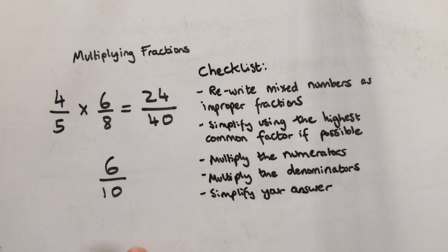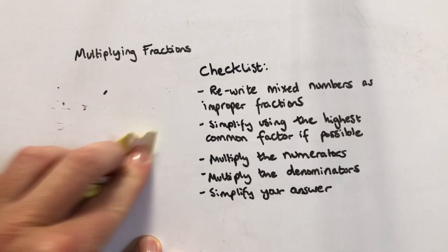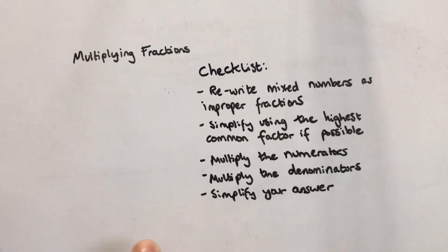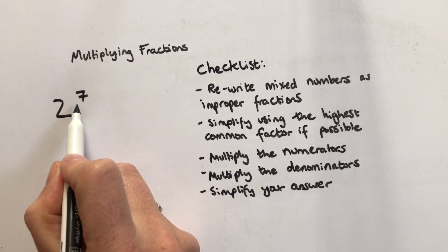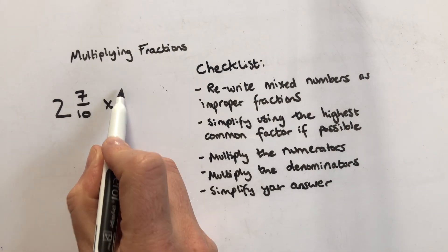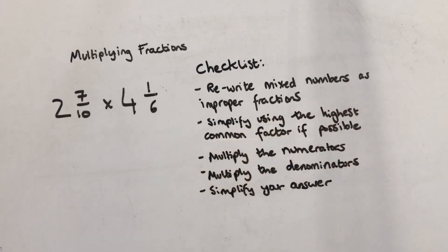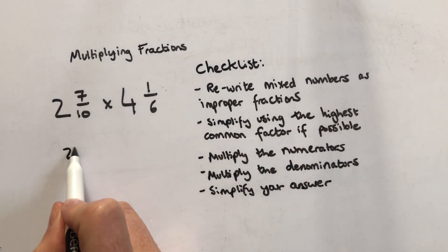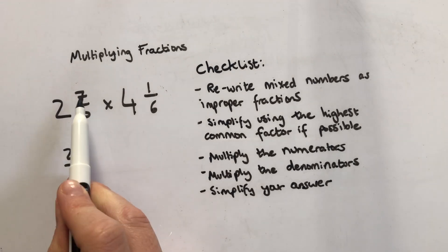The last example I'm going to show you is the mixed number example. Two and seven tenths multiplied by four and one sixth. You must write these as improper fractions. So I'm going to have twenty seven tenths because two times ten is twenty, add the other seven.